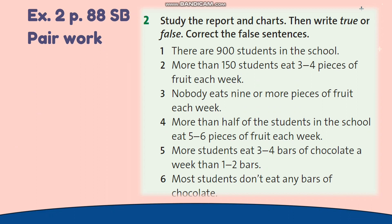Sentence 1: There are 900 students in the school. False — there are 800 students in the school. Sentence 2: More than 150 students eat 3–4 pieces of fruit each week. True. Sentence 3: Nobody eats 9 or more pieces of fruit each week. False — about 55 students eat 9 or more pieces of fruit a week. Sentence 4: Less than half of the students eat 5–6 pieces of fruit each week. False — about 255 students eat 5–6 pieces of fruit each week.